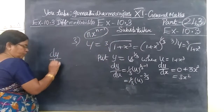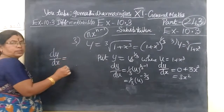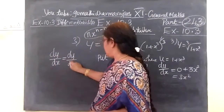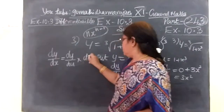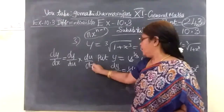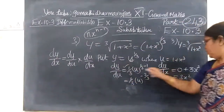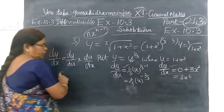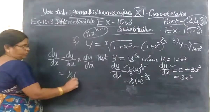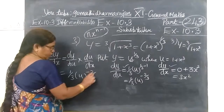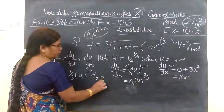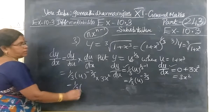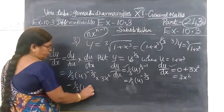So finally we need dy by dx. This is nothing but dy by du into du by dx, which gives 1 by 3 times u power negative 2 by 3 into du by dx.